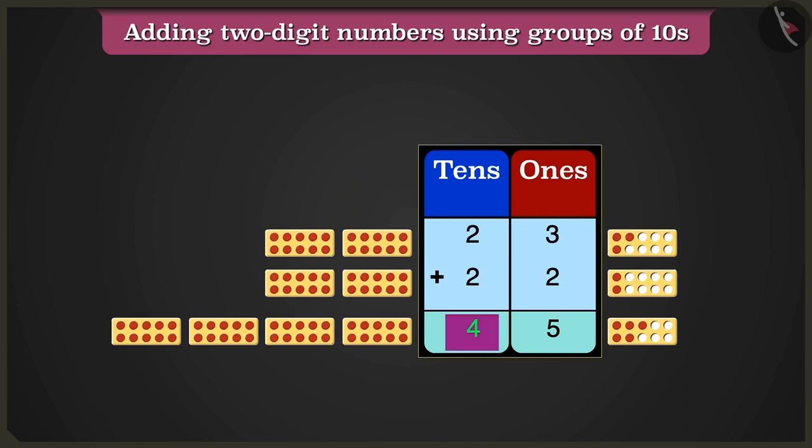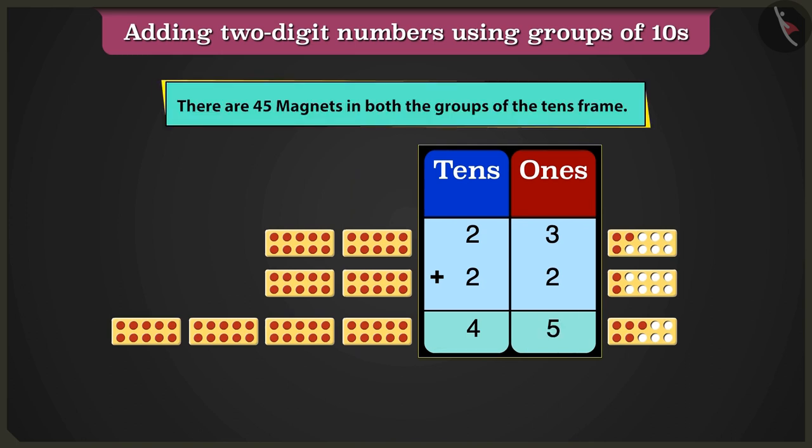So here there are 4 10s and 5 1s. Therefore, in both the groups of the 10s frame, there are 45 magnets altogether.